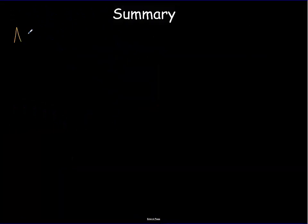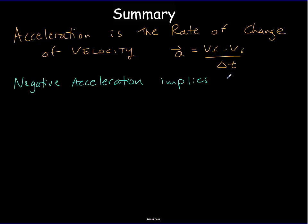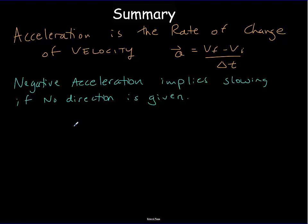Let's summarize the big ideas. Acceleration is the rate of change of velocity, written as: a = (v_final − v_initial) / delta t. When using this equation, a negative acceleration implies slowing down if no direction is given — for example, if an object is moving at 20 km/h with no direction specified. But in general, a negative acceleration means acceleration to the left or downward.